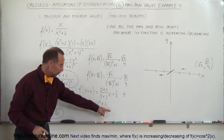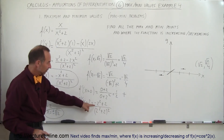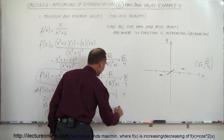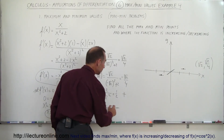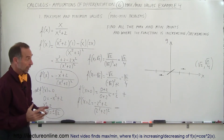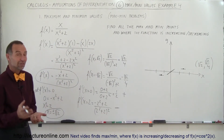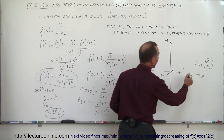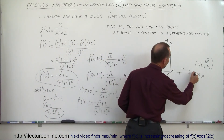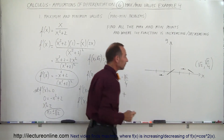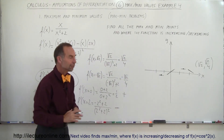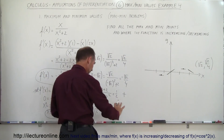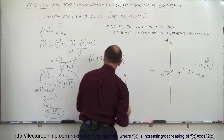The denominator will always be positive. In the numerator, it's minus 4 plus 2 — that's a negative value. Negative means negative slope, which means the function is decreasing. So to the right, the function is decreasing. How about when x equals negative 2? Let's plug this point in.